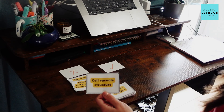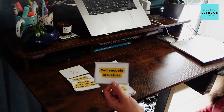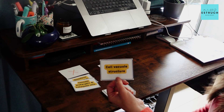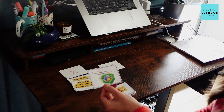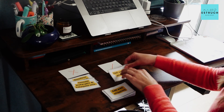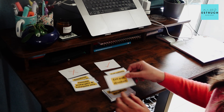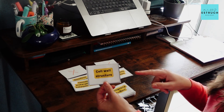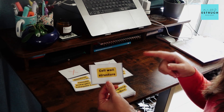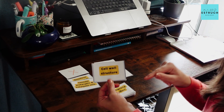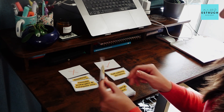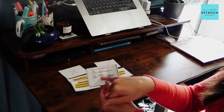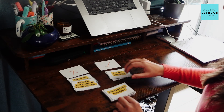Cell vacuole structure: fluid centre, tonoplast membrane on the outside, can contain coloured pigments. Cell wall structure: cellulose cell wall if it's eukaryotic plants, chitin if it's eukaryotic fungi, murein if it is prokaryotic. So plant, fungi, bacteria - cellulose, chitin, murein. That one goes on the correct pile.